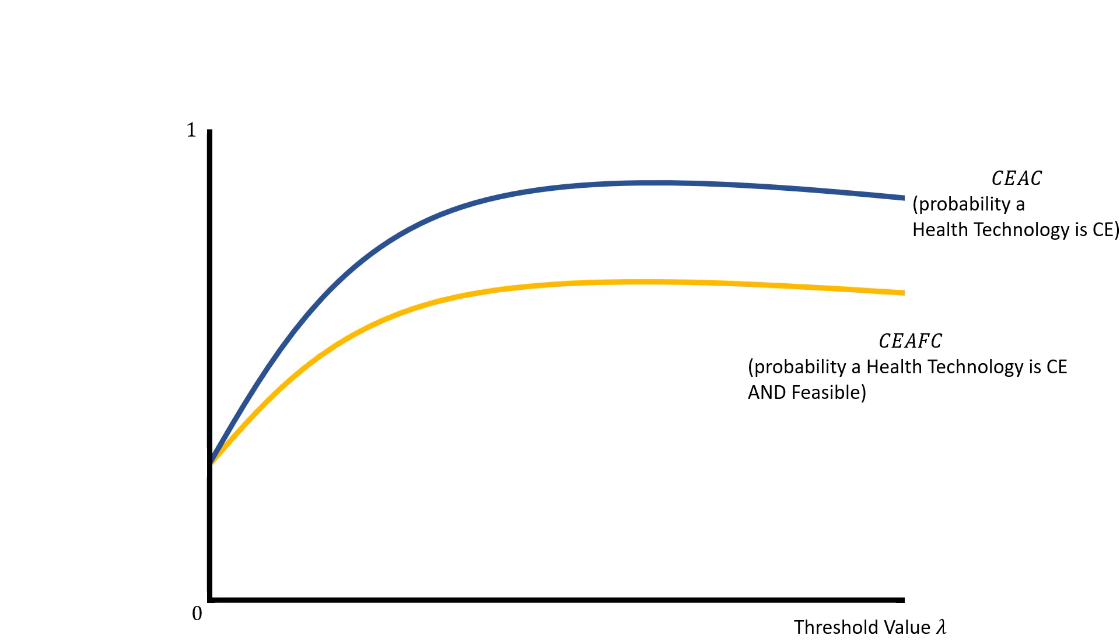Now with your cost effectiveness affordability curve, we're saying this is the probability that our health technology is cost effective and feasible for every threshold value. The feasibility is entering in a direct manner.